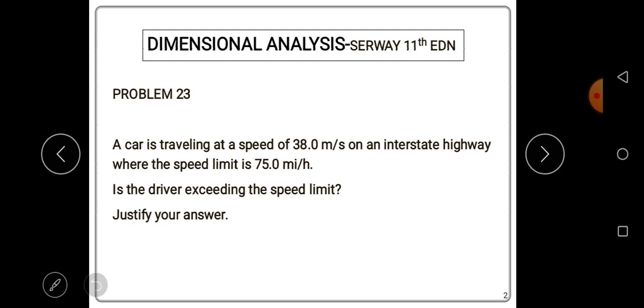In this case, what they want us to do is change one of these to make both of them into similar units. If we want this speed to be in meters per second, then we have to change 75 miles per hour into meters per second. Or if we want to make a common unit to be miles per hour, then we have to change 38.0 meters per second